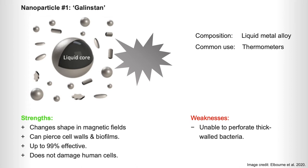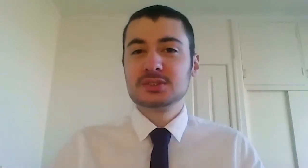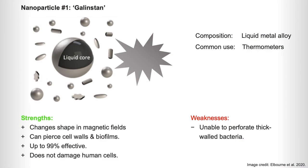The first nanoparticle we'll be talking about is gallinstan. Gallinstan is a liquid metal, kind of like mercury, and it's commonly used in thermometers. Its strength is that it's magnetically active, so in a magnetic field it actually changes shape from a spherical form to a spiked ball, rod, or disc shape. All these secondary shapes are very sharp with a lot of sharp edges and points, and they can actually tear through bacterial cells. This is up to 99% effective. The other positive thing is they don't damage human cells because human cells are a lot thicker and more elastic. The only downside is they can't actually perforate thick-walled bacteria.